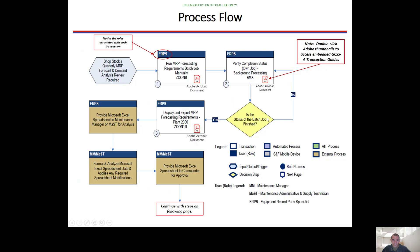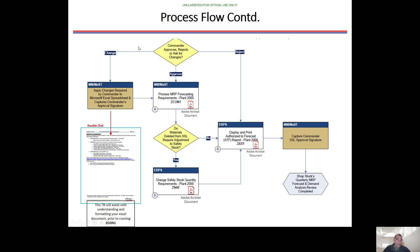Once the batch status shows 'finish,' the next step is displaying and exporting the MRP forecasting requirements in ZCOM 1 Delta. From there, provide the Microsoft Excel spreadsheet to the maintenance manager or tech for analysis. Then format the spreadsheet to capture required modifications — whether add, delete, or retain. Provide the spreadsheet to the commander for approval. The commander can change, reject, or approve it. Apply all changes from the commander's spreadsheet and capture the commander's signature at this point.